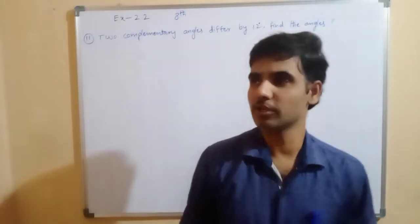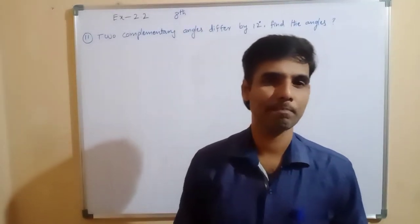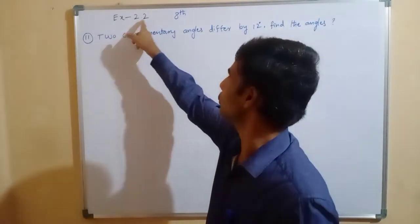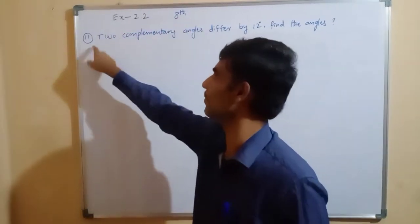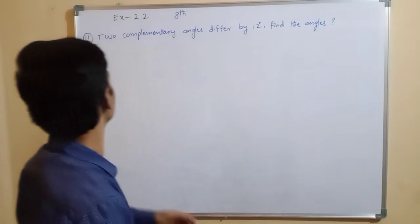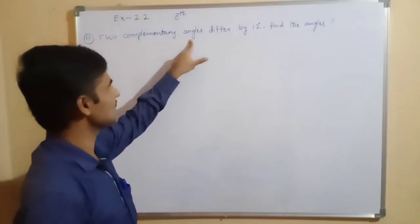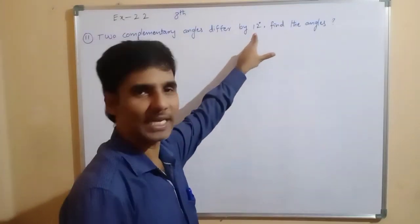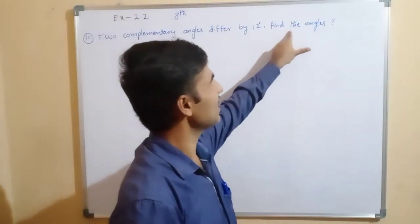Okay, dear students, now we are discussing exercise 2.2, 8th class, 11th problem. Two complementary angles differ by 12 degrees. Find the angles.